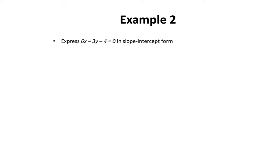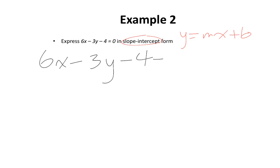In our last example, we want to express 6x minus 3y minus 4 equals 0 in slope-intercept form. If you remember, slope-intercept form is y equals mx plus b. Let's begin by rewriting our question. Ultimately, we want our variable y isolated on the left side of the equation, which means we're going to have to move some of these terms to the right side. I'm going to begin by moving negative 4 to the other side, which means I'm going to have to add 4 to both sides of the equation.